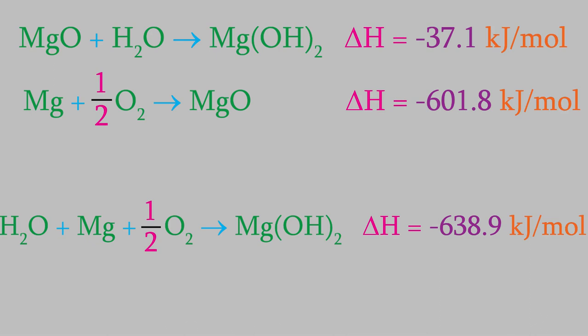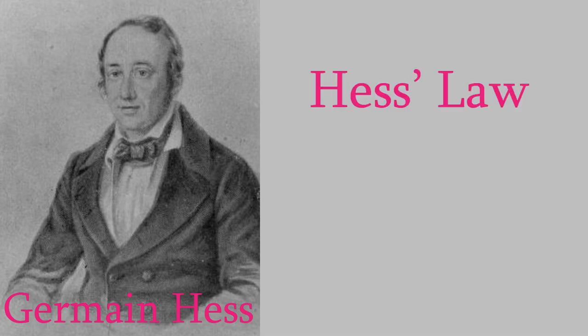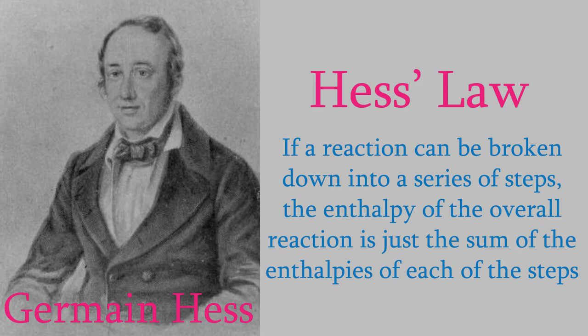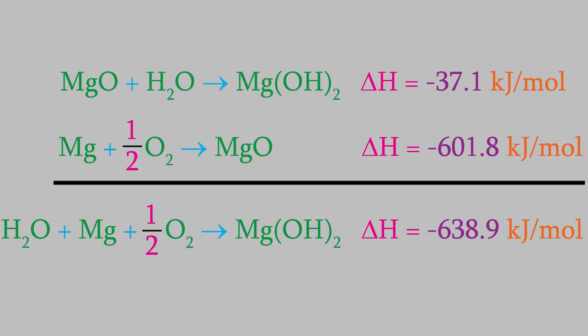What we just saw is an example of the second of the two principles we need in order to find the enthalpy of thousands of new reactions. This principle is called Hess's law, and it was first proposed by the Swiss-Russian chemist Germaine Hess. To summarize it: Hess's law says that if a reaction can be broken down into a series of simpler reactions, the overall enthalpy is just the sum of the enthalpies of each reaction. That's what we did in the example we just looked at — we had two simpler reactions and added them together to form a more complicated one.